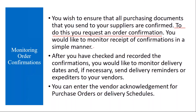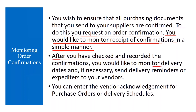To do this, you request an order confirmation. The moment you send the PO to the vendor, you ask your supplier to give you a confirmation that they received the PO and are okay with it. You would like to monitor the receipt of confirmations in a simple manner and also monitor delivery dates, and if necessary, send delivery reminders or expediters to your vendors.